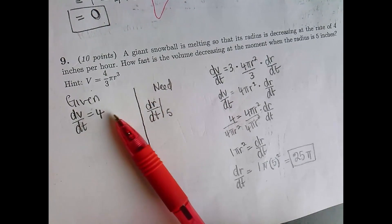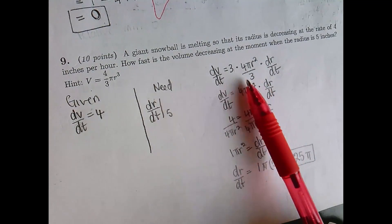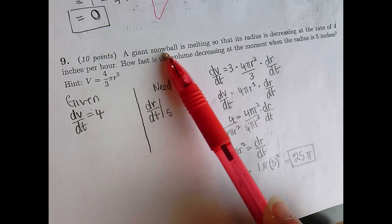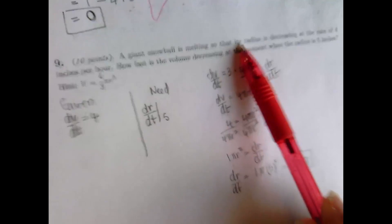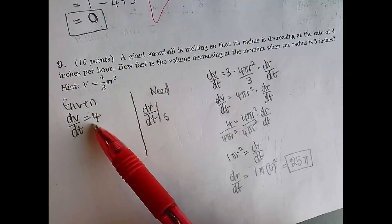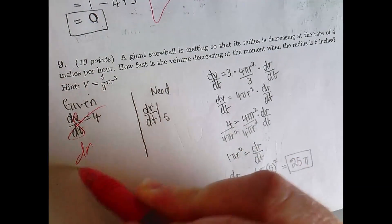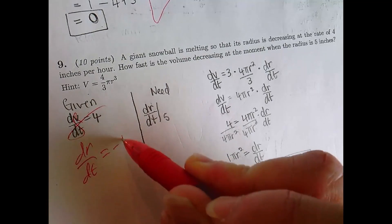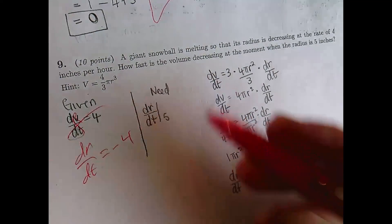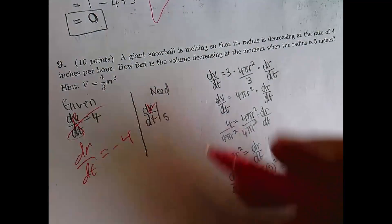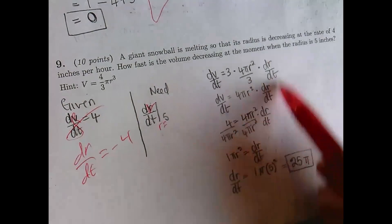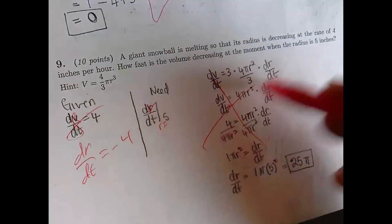This one's interesting — they took the derivative correctly, but the information given is wrong. It says a giant snowball is melting so that its radius is decreasing at the rate of four inches per hour, so this should be dr/dt equals negative four. They need dv/dt when r is five. So they messed up there, but it looks like they did some work — it's worth 10 points, so good effort.